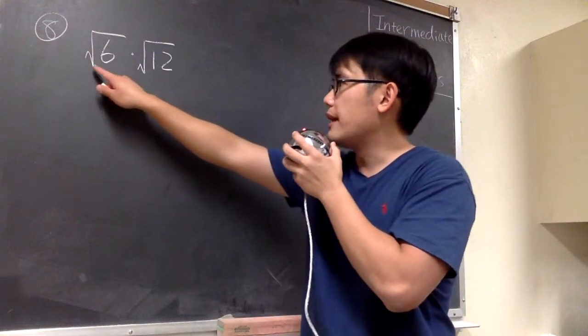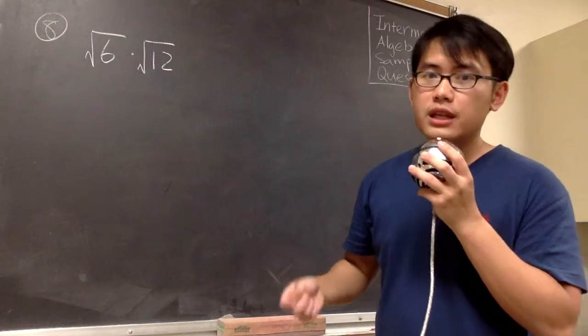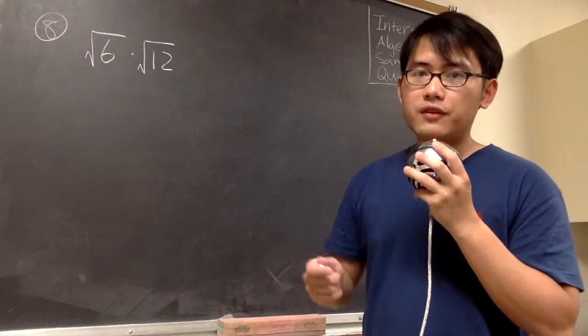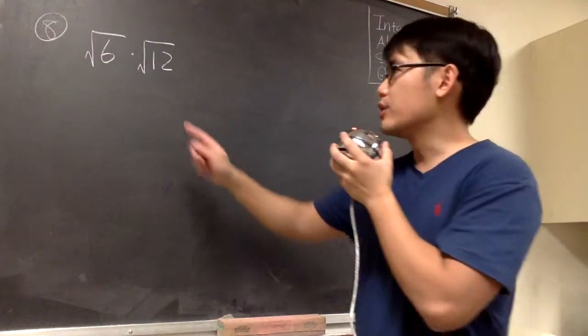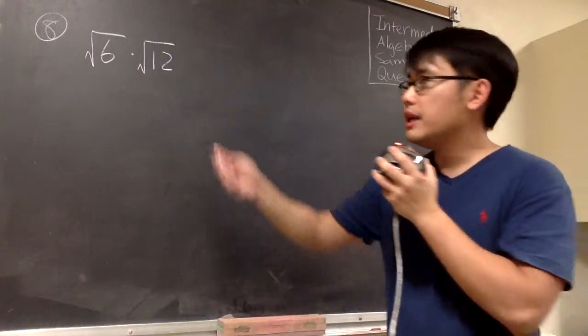For number eight, we are going to multiply square root of six times square root of twelve. When we're trying to multiply square root numbers, we can just work on the numbers inside first. However, that's not true when we're trying to add or subtract square root numbers - it only works when we're trying to multiply or divide square root numbers.